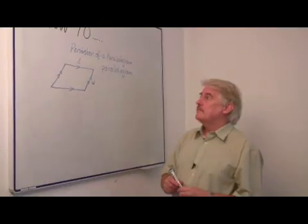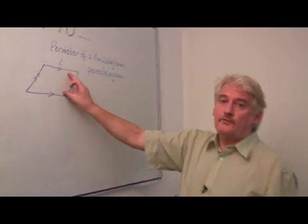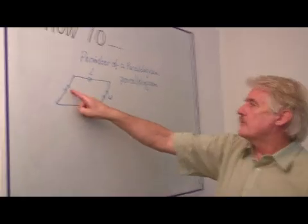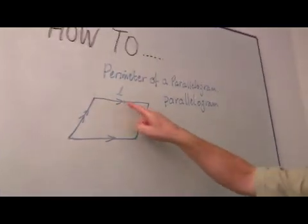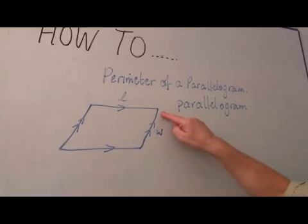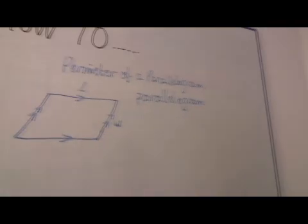Now a parallelogram is a figure, a four-sided figure, with two sets of opposite sides parallel. So this is parallel to that. This is parallel to that. This is what makes it a parallelogram.